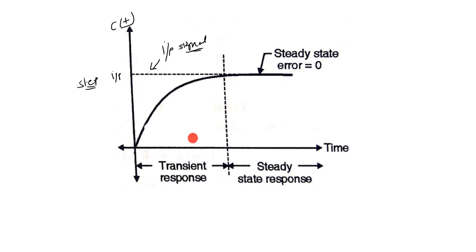In the first portion, you can see that the response of the system is increasing exponentially with respect to time up to a certain point, and after that it becomes constant. This portion is the transient response of the system. The transient response is defined as the change in output with respect to time.